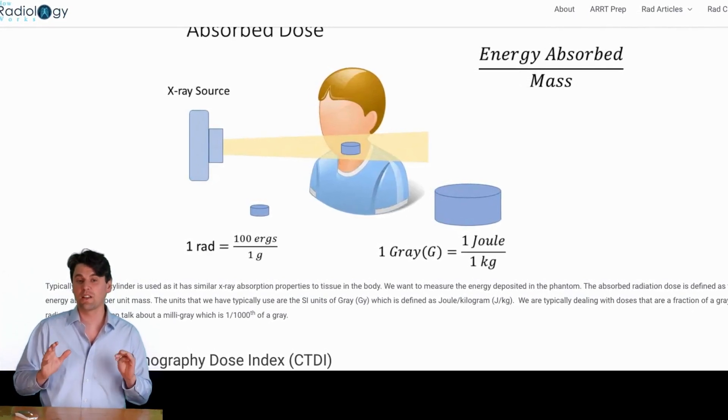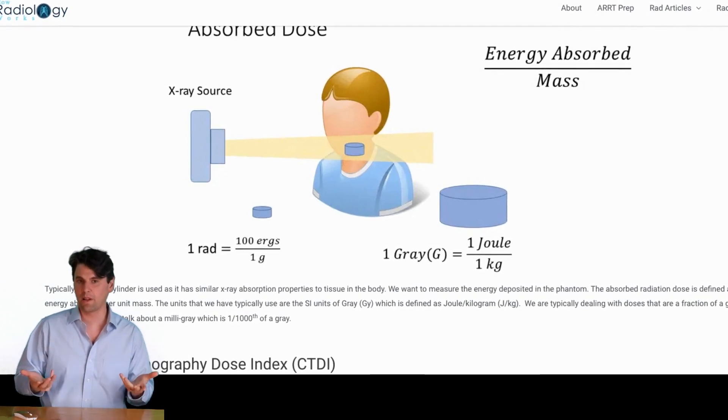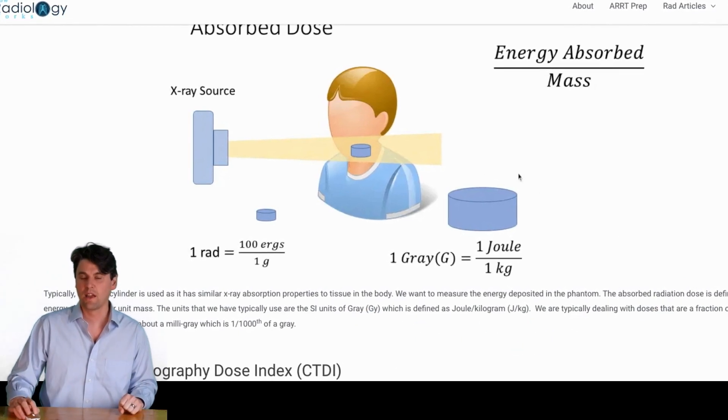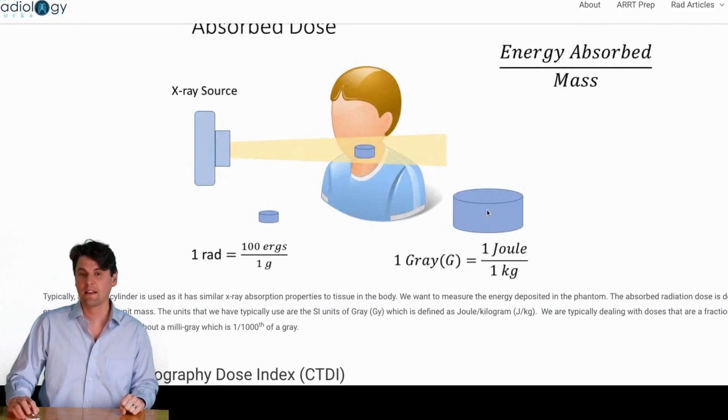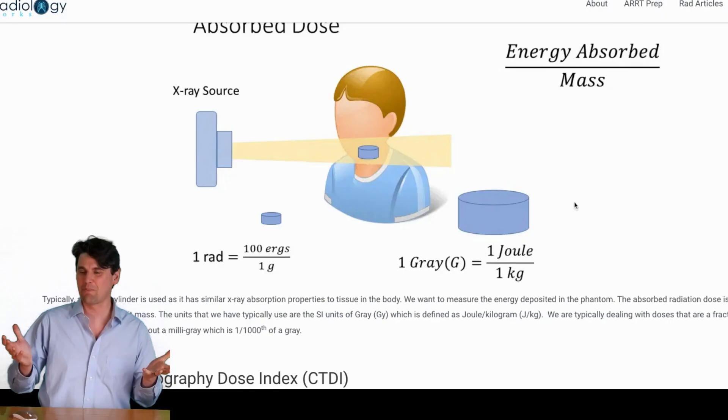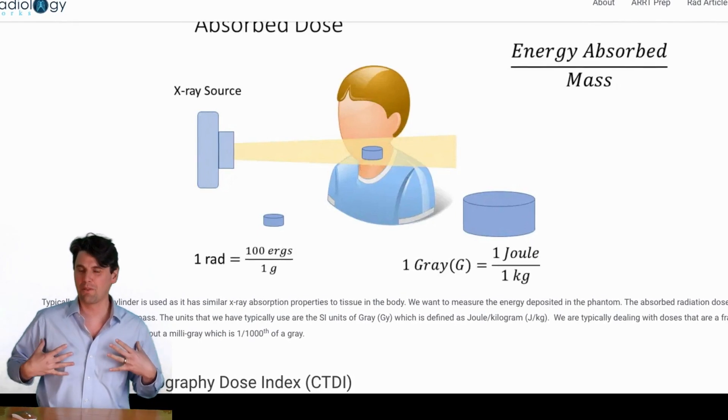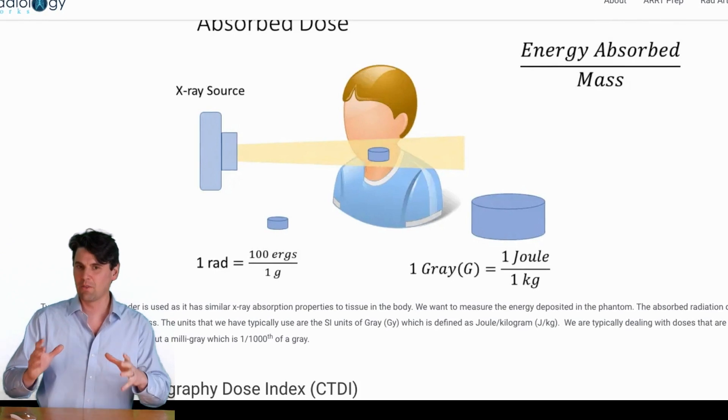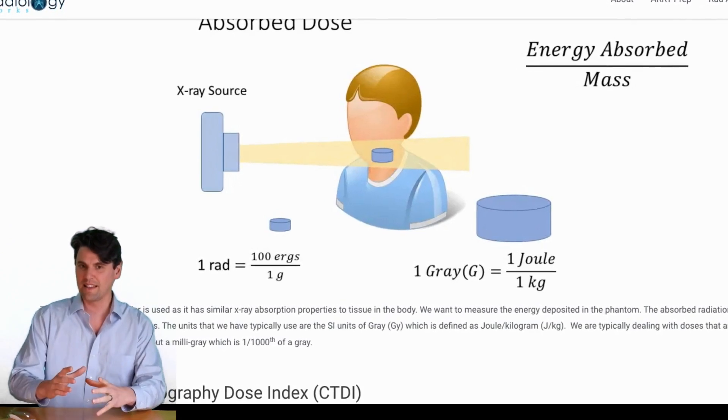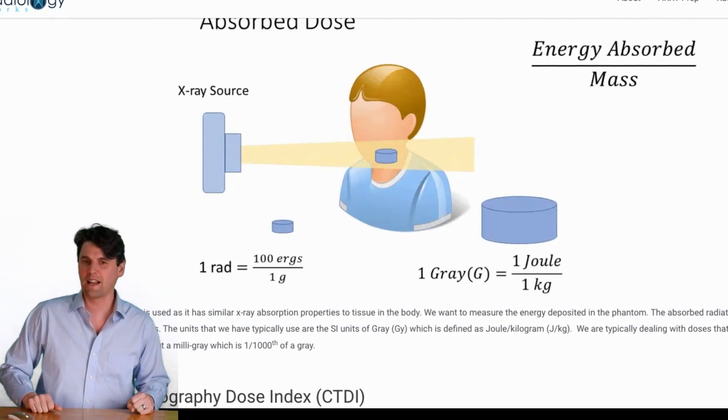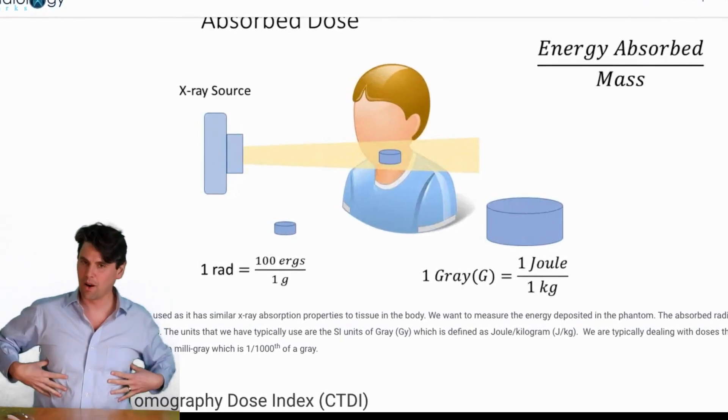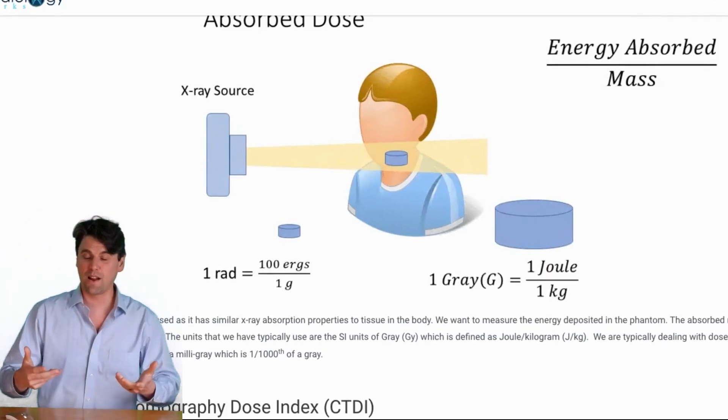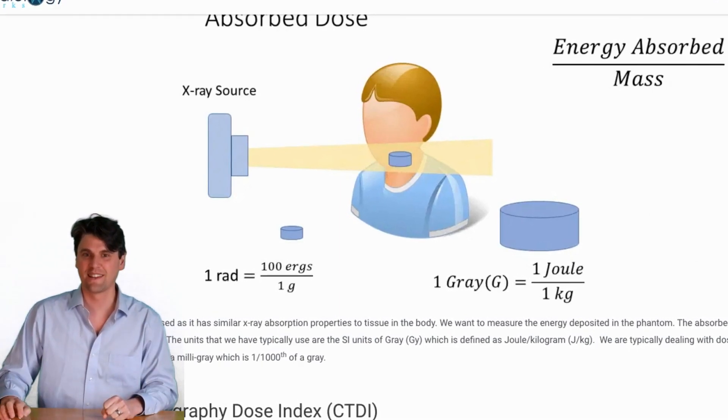In CT, we're usually talking about much less than a gray, so we typically use milligray or one one-thousandth of a gray to describe our units. We'll typically want to have a plastic cylinder because that's a physics type representation of a human. If we think about our human being mostly made up of water, we'll take a plastic cylinder and use either a 32 or 16 centimeter plastic cylinder, depending on if we're thinking of imaging the head or the body. Both of those will be used as reference in what we call our CTDI measurements.